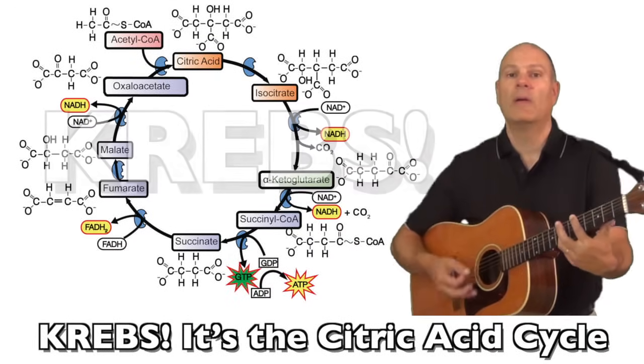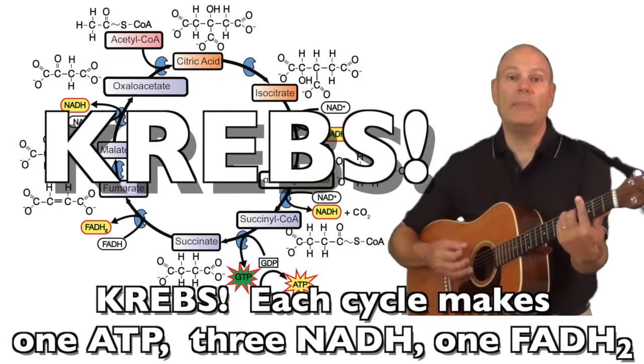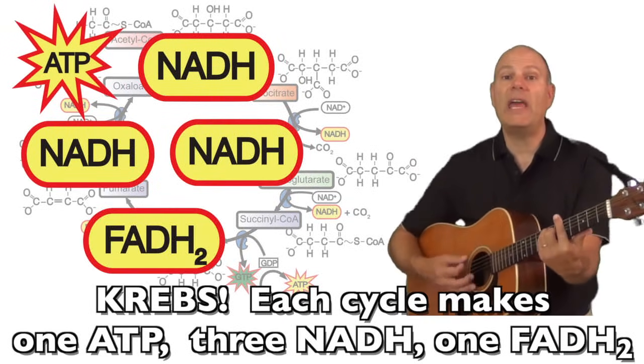We're talking Krebs. It's a citric acid cycle Krebs, tricarboxylic acid cycle Krebs. Each cycle makes one ATP, three NADH, one FADH2.